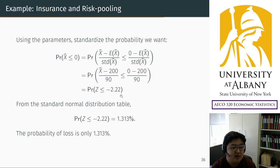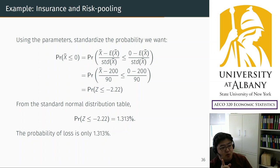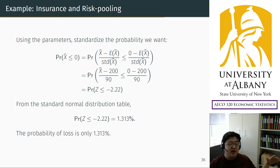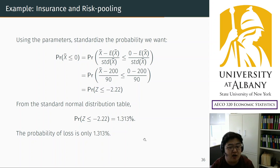Looking up the probability corresponding to z = -2.22 from Excel gives approximately 1.3%. So the probability of loss is no longer 10% — with one customer the probability of loss was 10%, but if you pool 100 independent customers, the risk drops to only 1.3%. This is risk pooling, and this is how the insurance business is sustained — they don't need to worry much about their risk.